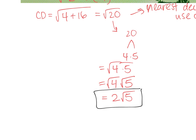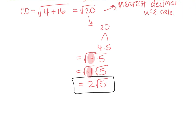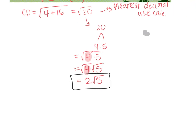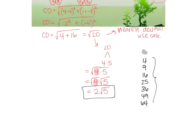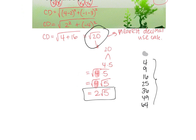You could break 20 into 2 and 10, but 2 and 10 are not perfect squares. You need to pull out a perfect square like 4 to simplify. Know your perfect squares: 4, 9, 16, 25, 36, 49, 64, and so on. Make sure you know your perfect squares for these types of problems so you can simplify answers like √20.